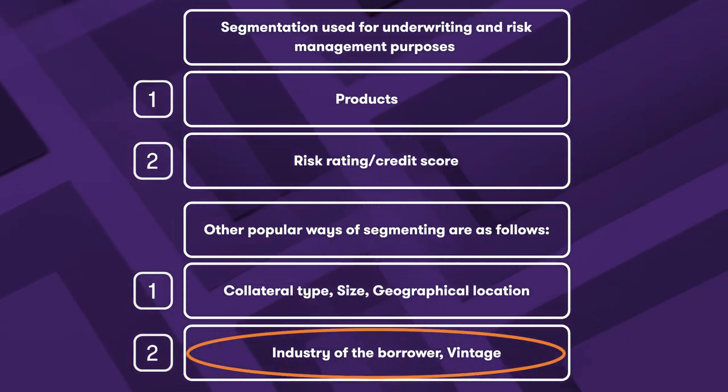Other segmentation criteria include industry of the borrower and vintage. It's sometimes important to aggregate pools which are individually immaterial or lack the data on their own for credit risk modelling purposes. There are various statistical tests that should be used to determine whether the pools thus created respond similarly to different scenarios and whether they are adequately differentiated from other pools. While pools used for ECL calculation are not static, changes in the pool structure should only be made if driven by underlying changes in circumstances. Constant tinkering with the ECL model is not ideal.